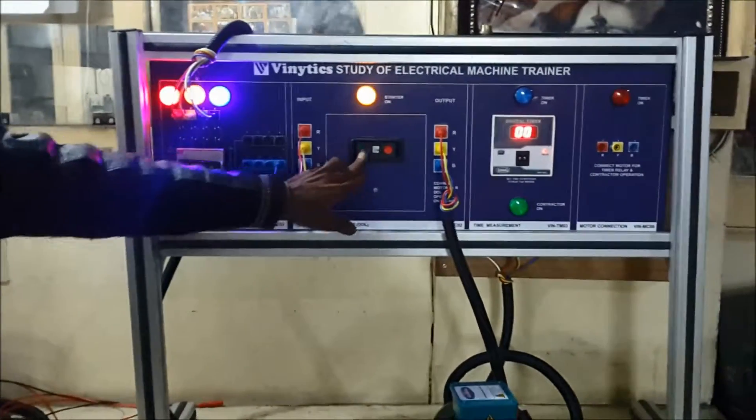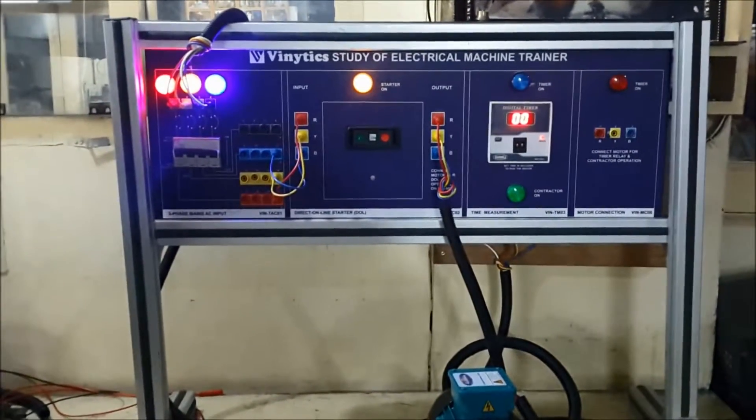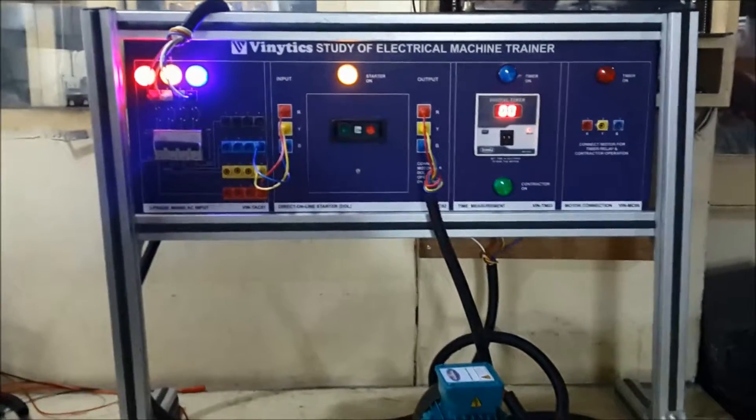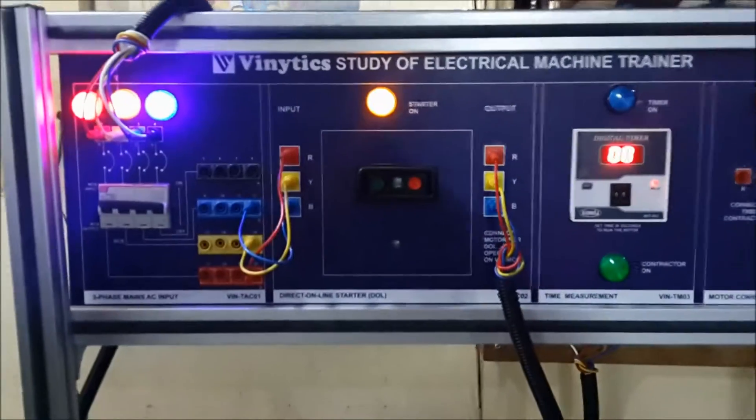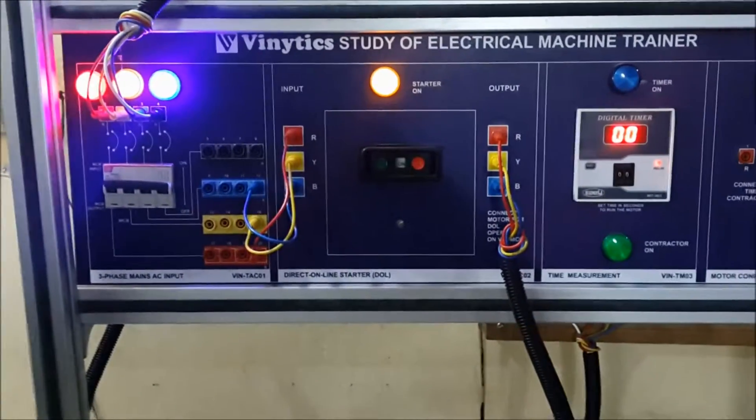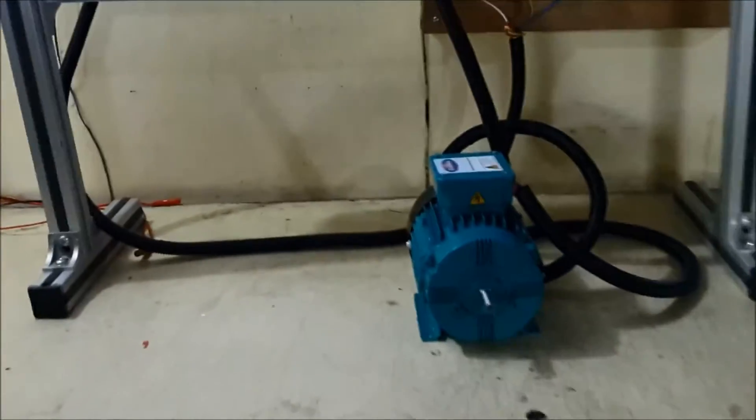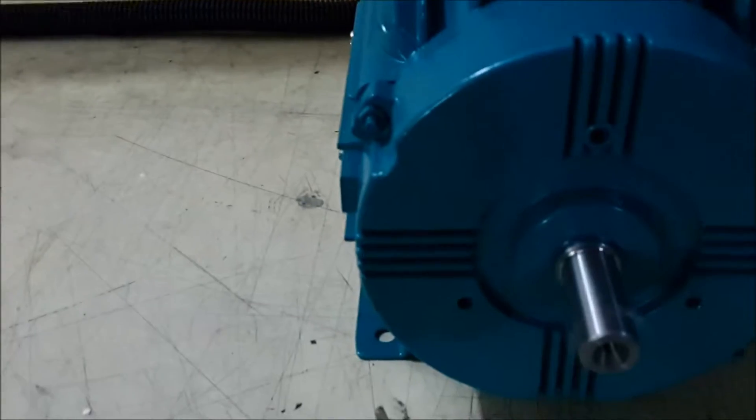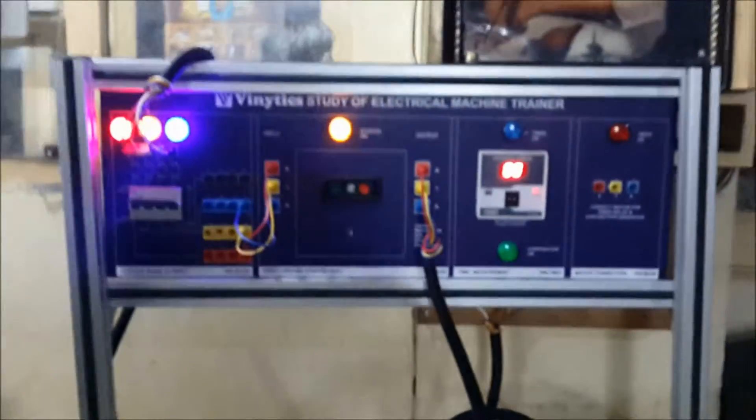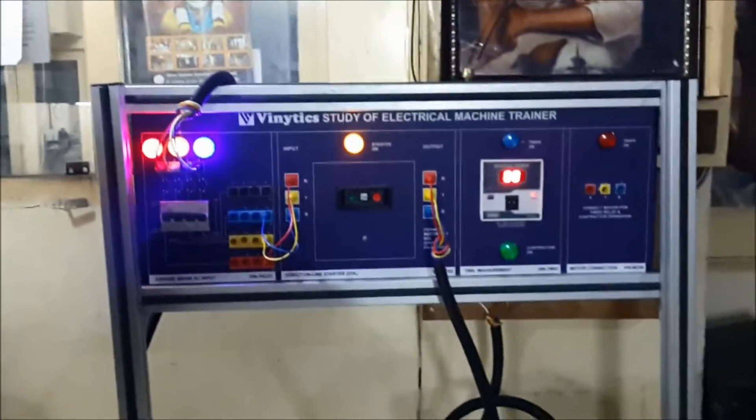As you can see, the LED marked as starter on glows when the DOL starter is on. Now, the motor is running at full 1450 RPM.